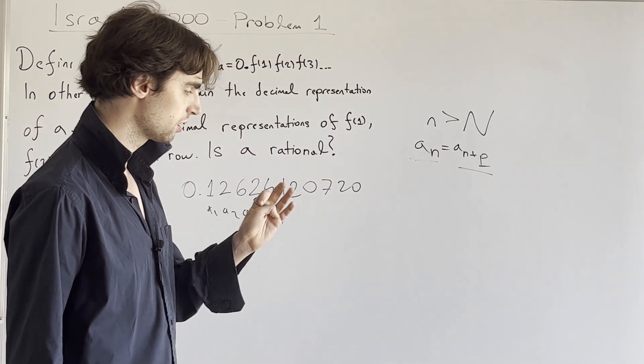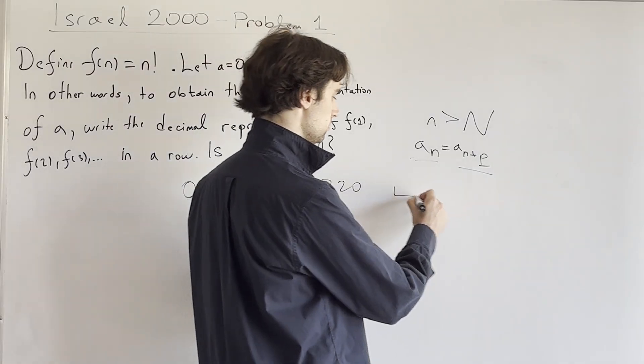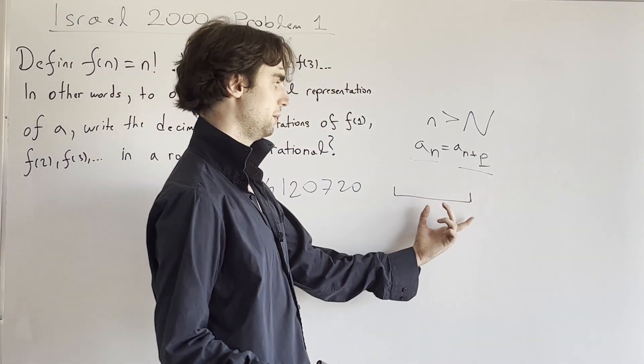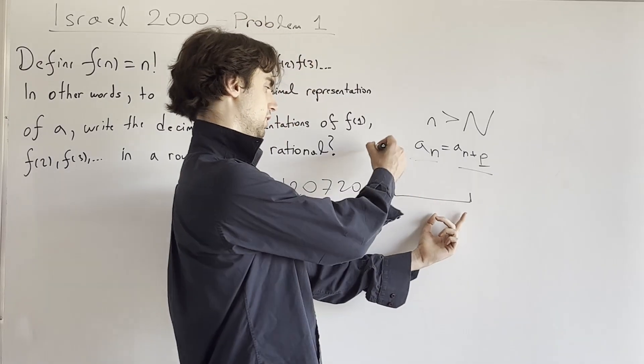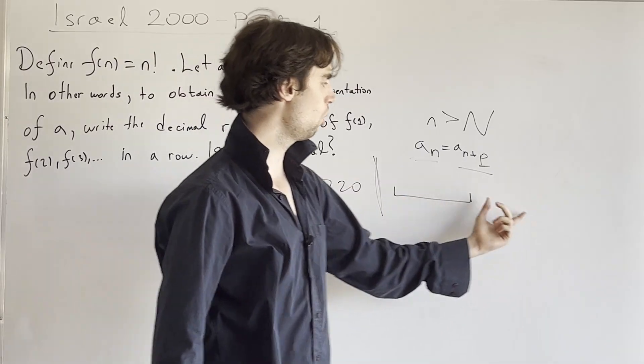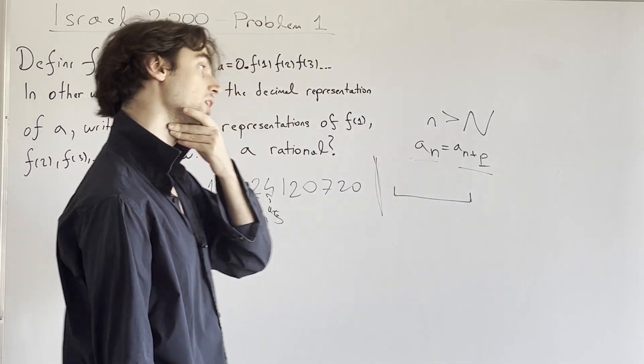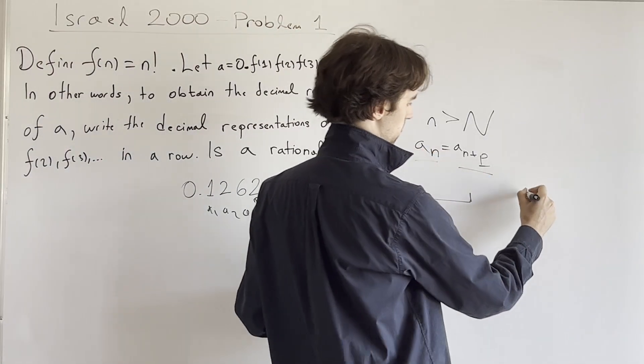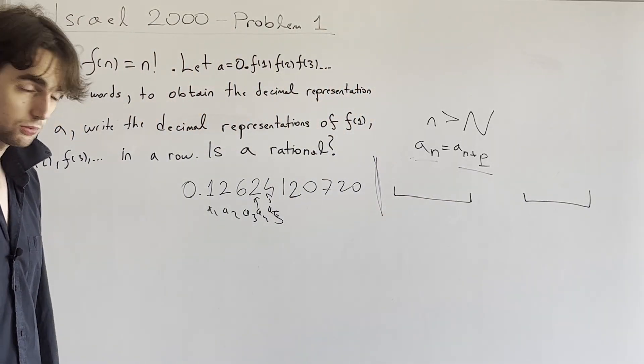Now, this means if I have P consecutive digits starting from this period point, then I know every other one and every other digit. And if I had any P consecutive digits later on, I could go back and figure out the starting ones. Okay.